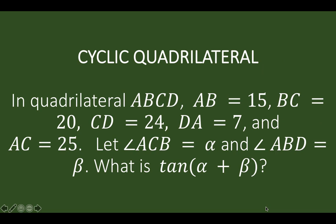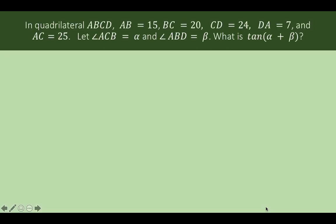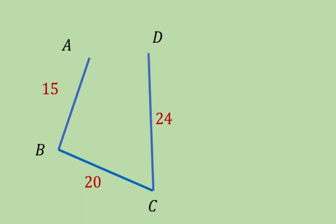Let's visualize this problem first. We are given a quadrilateral with side AB equals 15 units. Let these two points be A and B, and let side AB equal 15 units. Then side BC is given to be 20 units, side CD is equal to 24, and side DA is equal to 7.